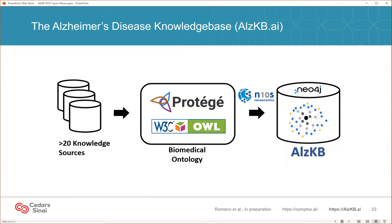The first thing we needed to do to get this project started was develop an Alzheimer's disease knowledge base. This is work done by my postdoc Joe Romano, a very talented individual who is joining the faculty at the University of Pennsylvania as an assistant professor. He had created a knowledge base called CompTox AI for computational toxicology projects, and we adapted that here to Alzheimer's disease. This knowledge base includes more than 20 different sources of knowledge and is one of the most comprehensive knowledge bases for Alzheimer's disease out there. It includes gene ontology, KEGG pathways, DrugBank for information about drugs, and knowledge sources about diseases and symptoms.